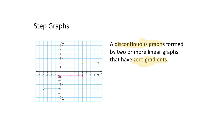One important feature of the step graph is that each line has an open and a closed point. This is important because at any one point along the x-axis there can only be one value. For example, at x equals negative one, there is an unfilled dot at negative one and a filled dot at four, so the value when x equals negative one is negative four, not negative one. A solid dot means the value is included in that line; an empty dot means it is not included.